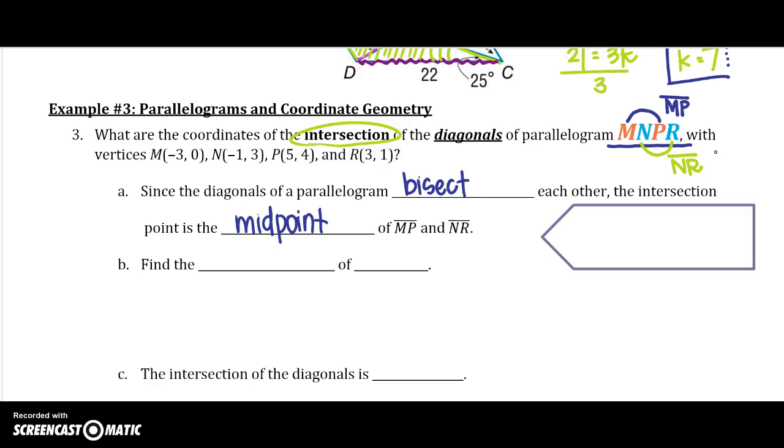So we need to find the midpoint of only one diagonal. And you actually get to pick which one you find the midpoint of. If you pick one, the midpoint will actually be the same because it is the intersection. So just as a reminder of the midpoint formula, the average of your x's divided by 2 and the average of your y's divided by 2.